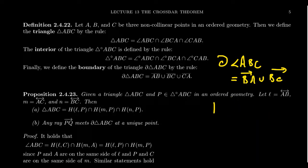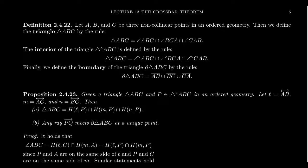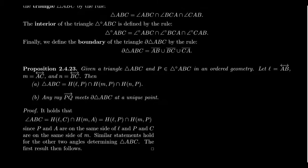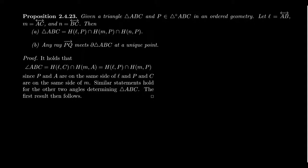So a triangle is the intersection of three angles. We can talk about the interior of the triangle, the boundary of the triangle, and also the exterior — all those points which are not on or in the triangle. As we finish our discussion of order geometry, I want to provide a proof of a simple proposition about triangles.